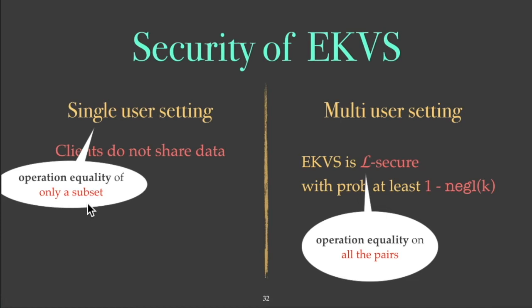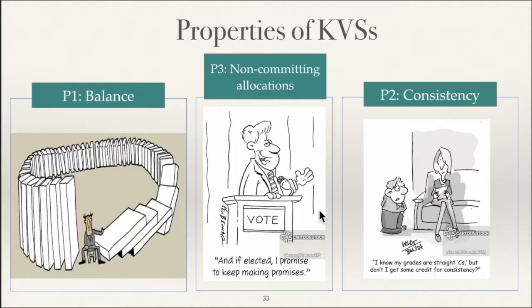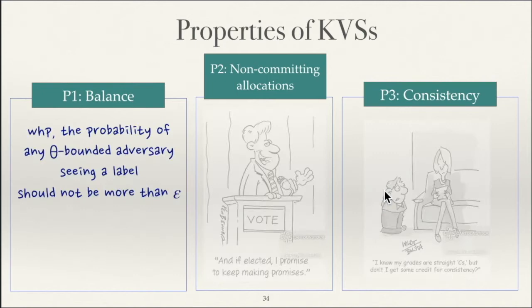We isolated three properties of key value stores with security implications. We called the first property 'balance,' the second 'non-committing allocations,' and the third the 'consistency guarantee.' We show that if key value stores satisfy these two properties and a certain notion of consistency, it is possible to reduce the leakage in the single-user setting. Balance says that with high probability, any adversary that corrupts at most theta nodes should not see a label with more than epsilon probability. We define balance using the four mappings we abstracted earlier.